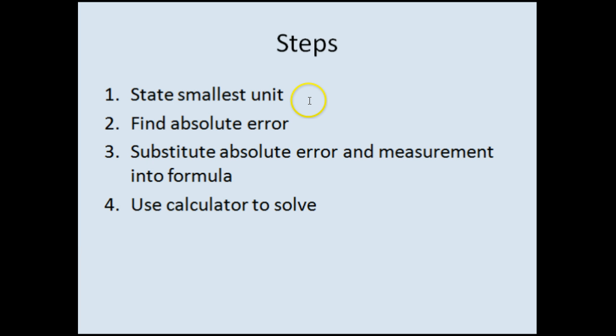Let's have a quick look at the steps. So when you're given a measurement and you're asked for the percentage error, first thing you need to do is state the smallest unit in your measurement, then find the absolute error. Once you've done that, you can now substitute in the absolute error and your measurement into the formula and calculate to solve. Let's have a look at an example.